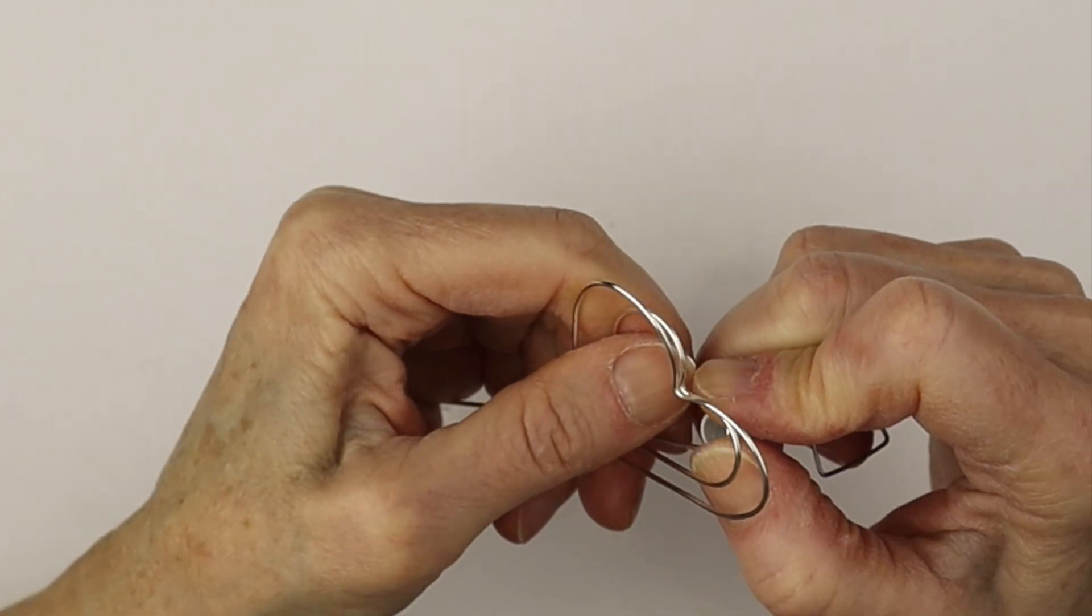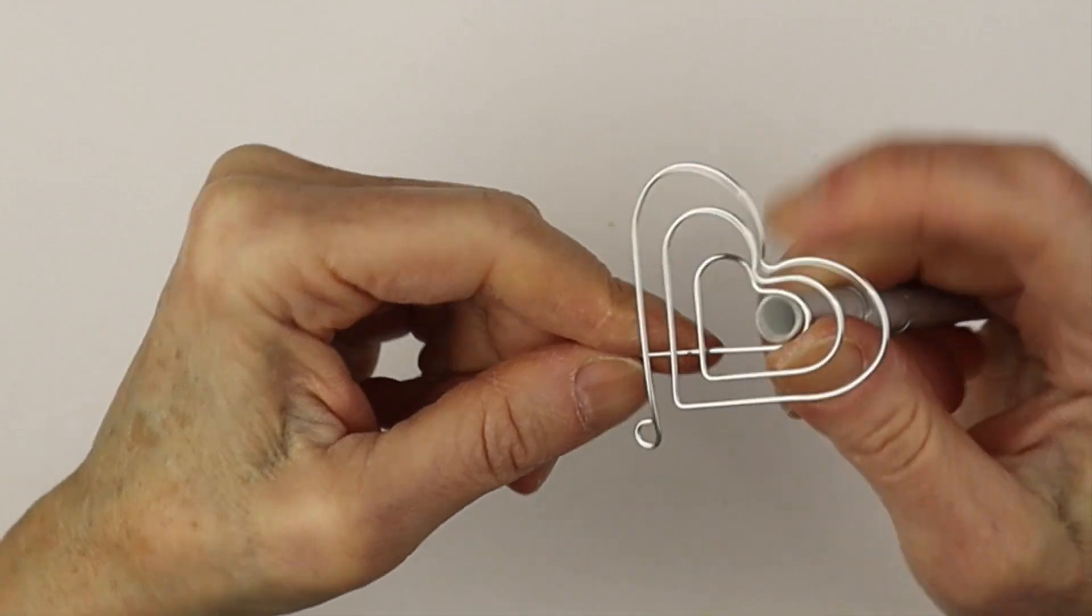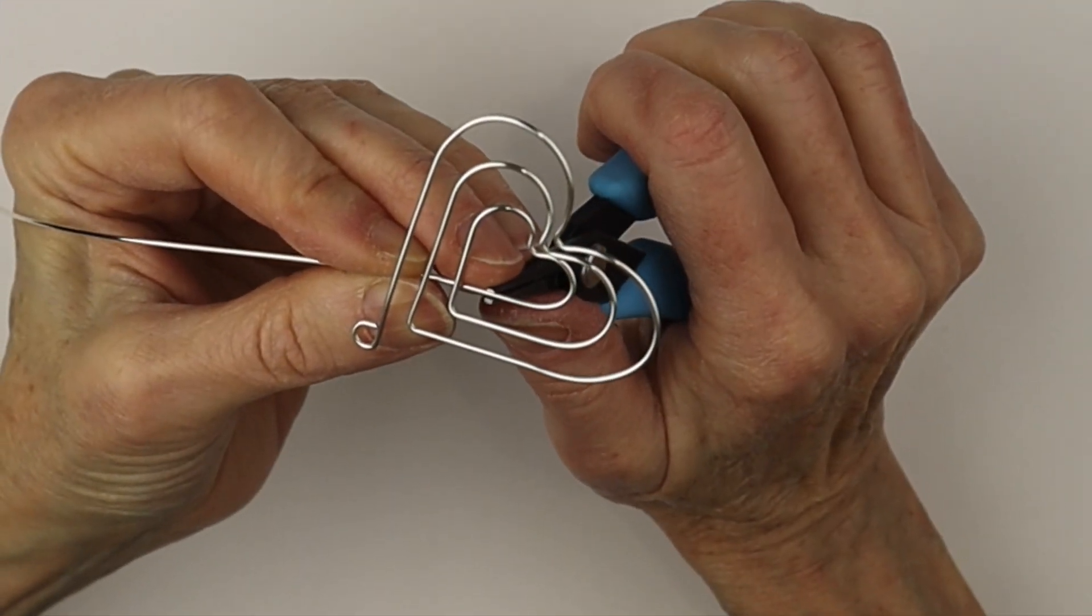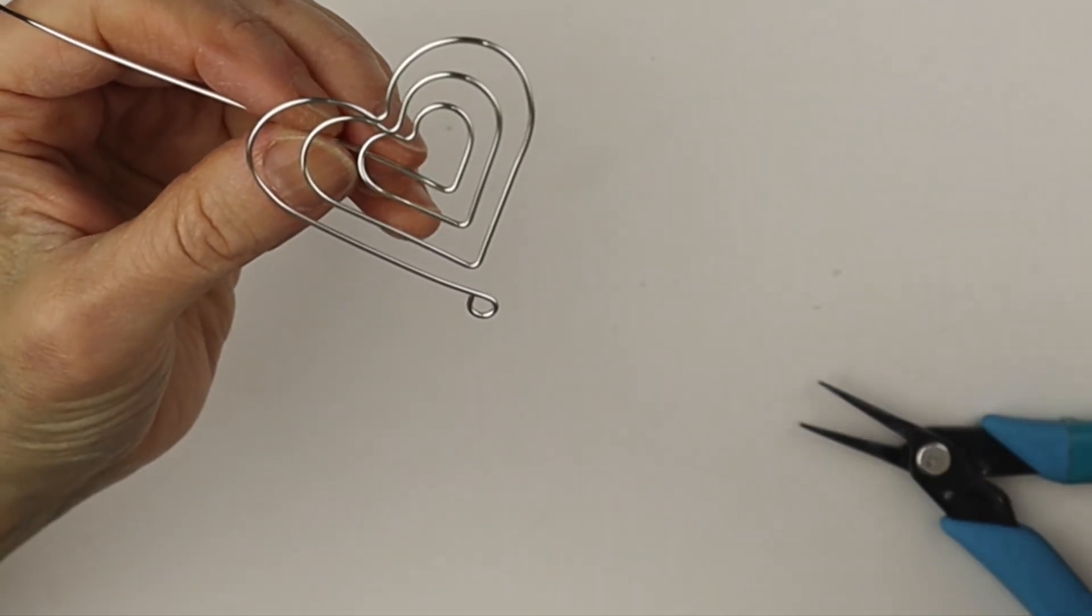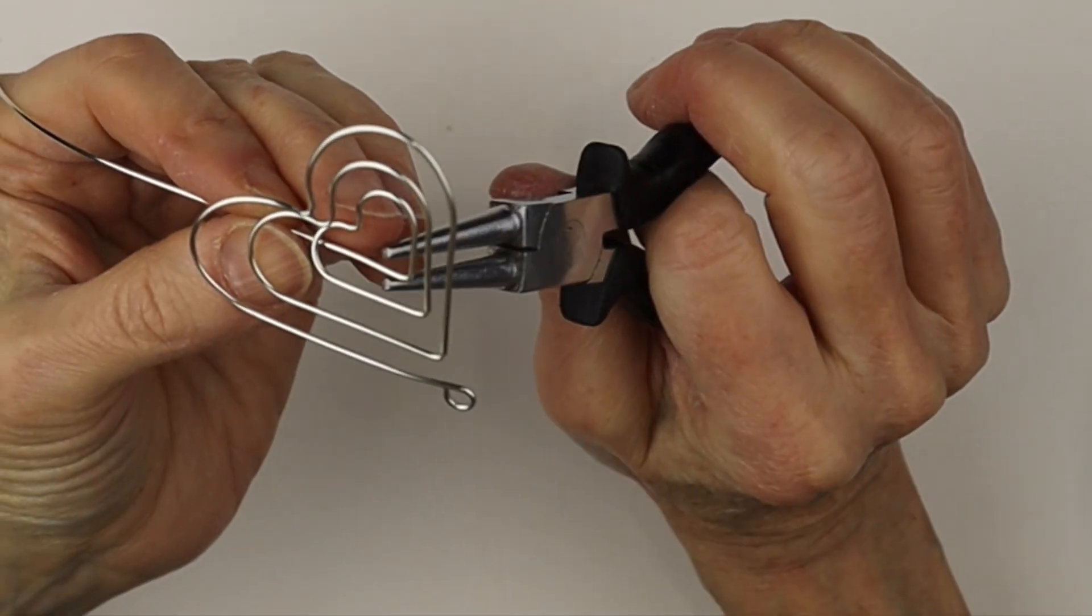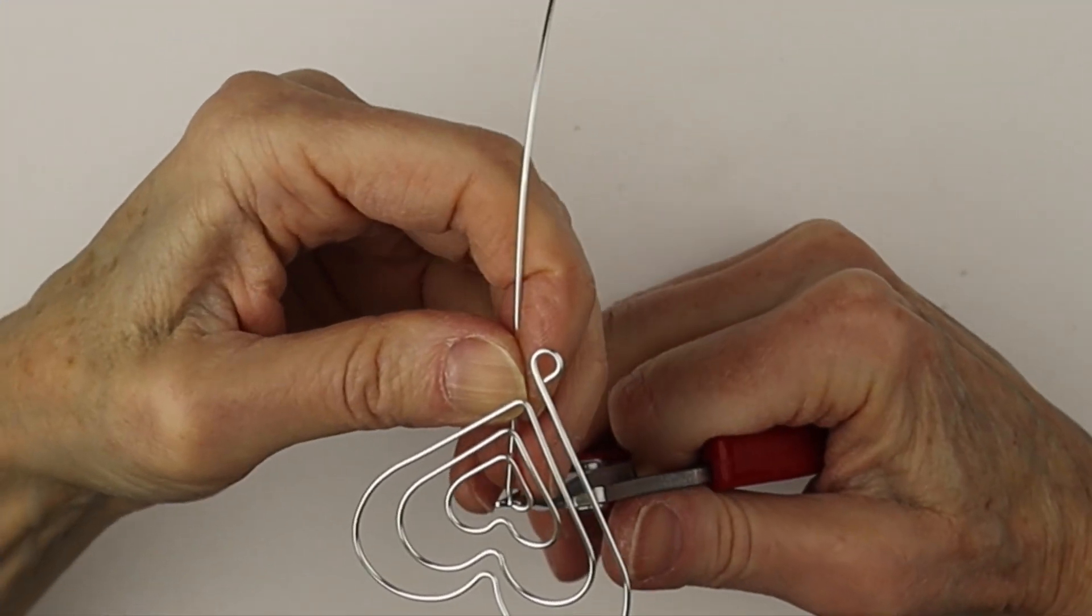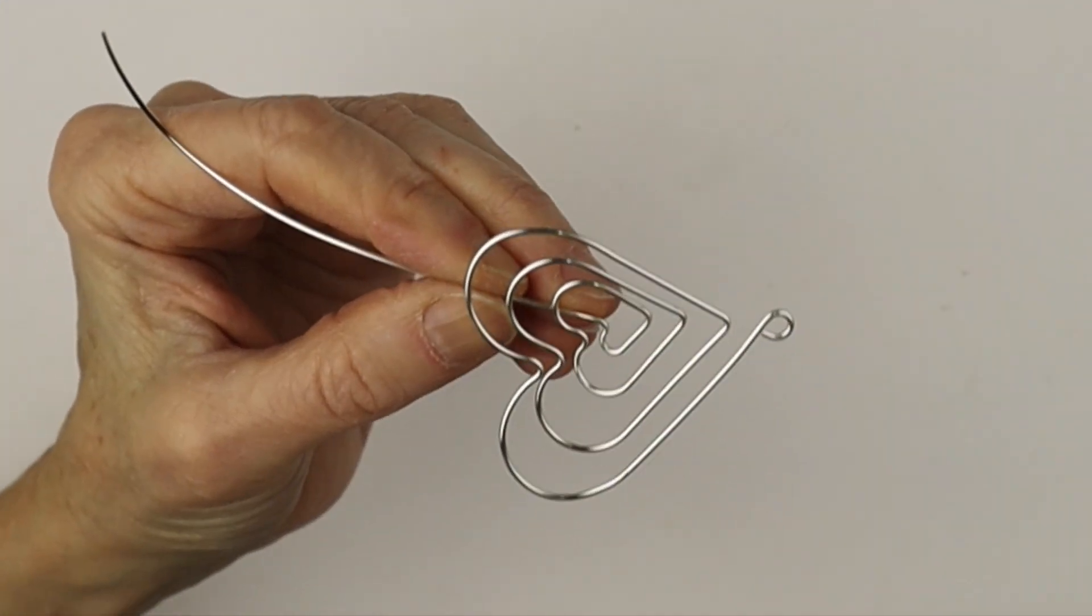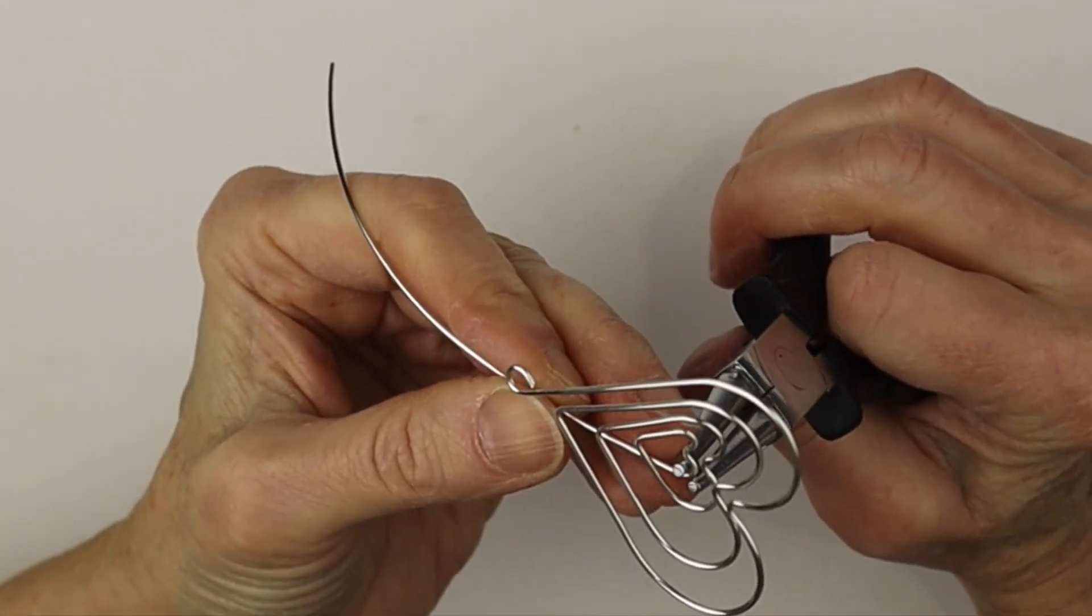Do any little adjustments that you need to get it even and to make sure the heart sits inside the previous heart. So now the Xuron tweezer nose pliers to make a sharp angle up, and then our round pliers to make the smallest heart inside. We're just going to make it as small as we can so it fits right inside there. Bring it around.